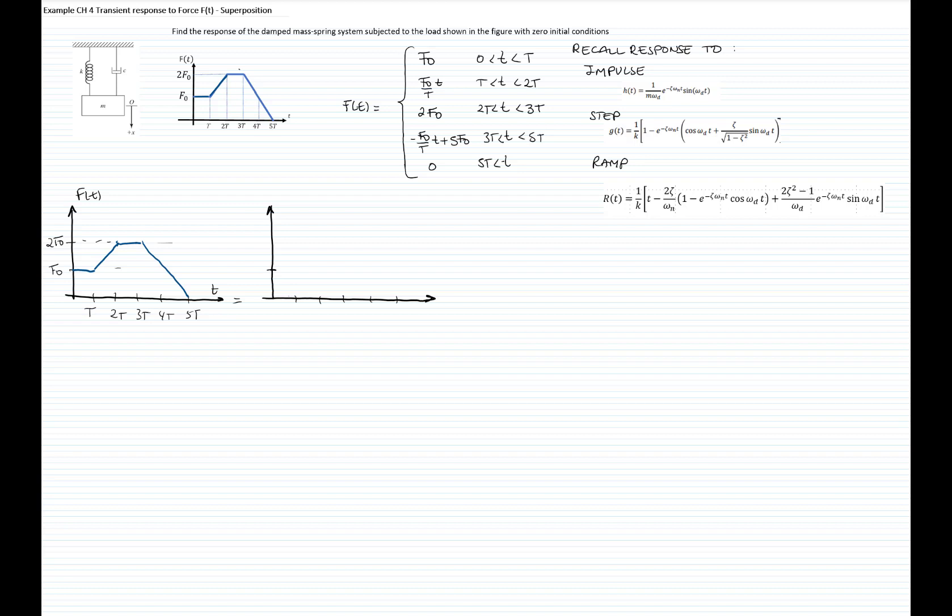So as you see here, for T less than capital T and greater than 0, we have this is just a step function, but that step function goes to infinity. That's the answer that we know. So we will use this response, G sub T, and then the response for that period of time will be F sub 0, which is the magnitude of the step, times the response of the step function.